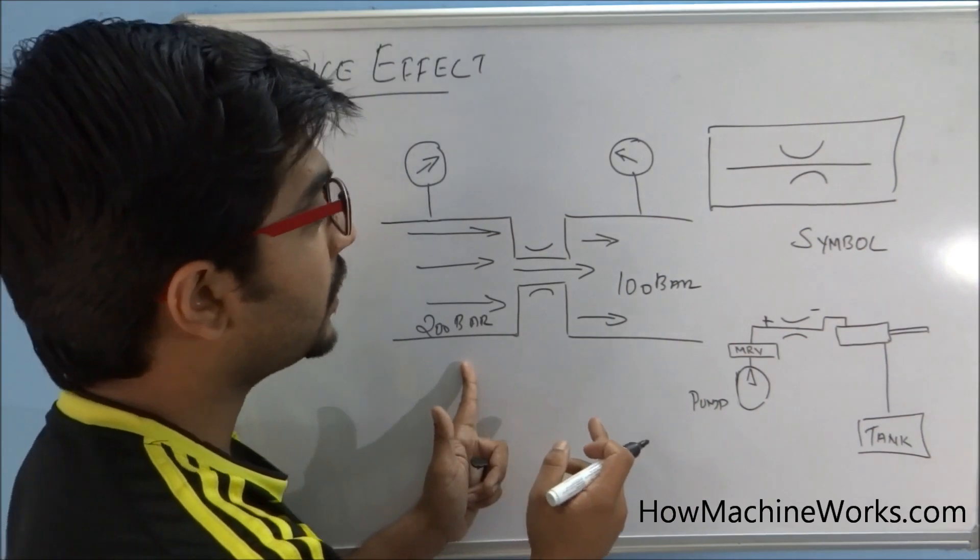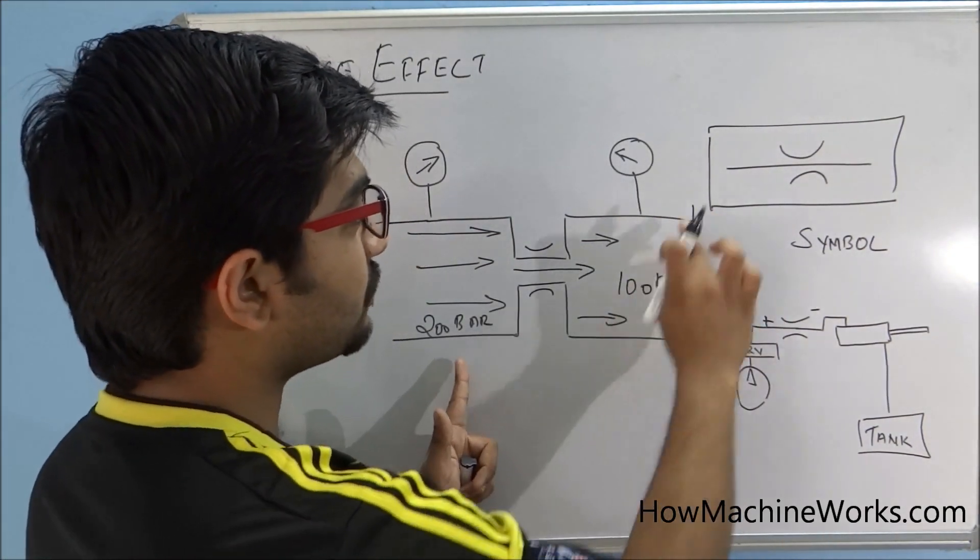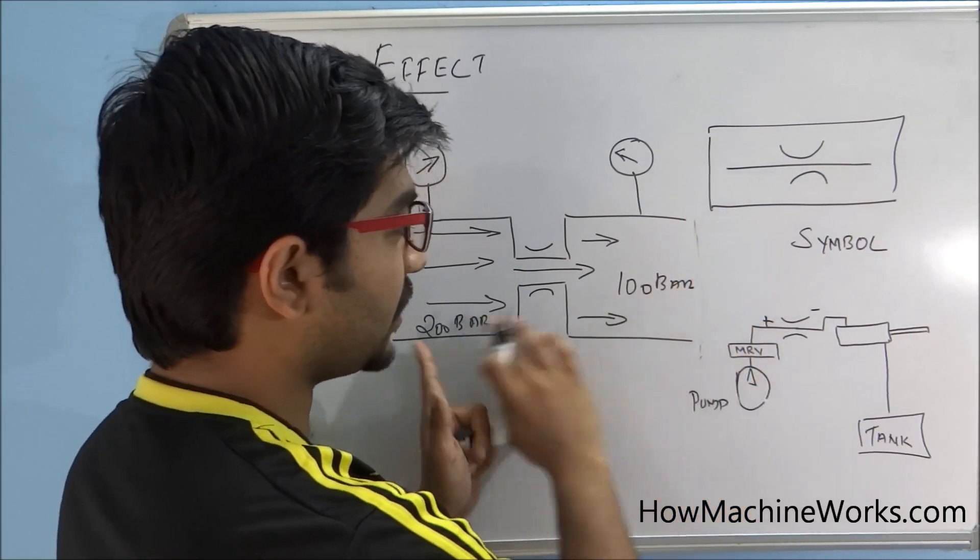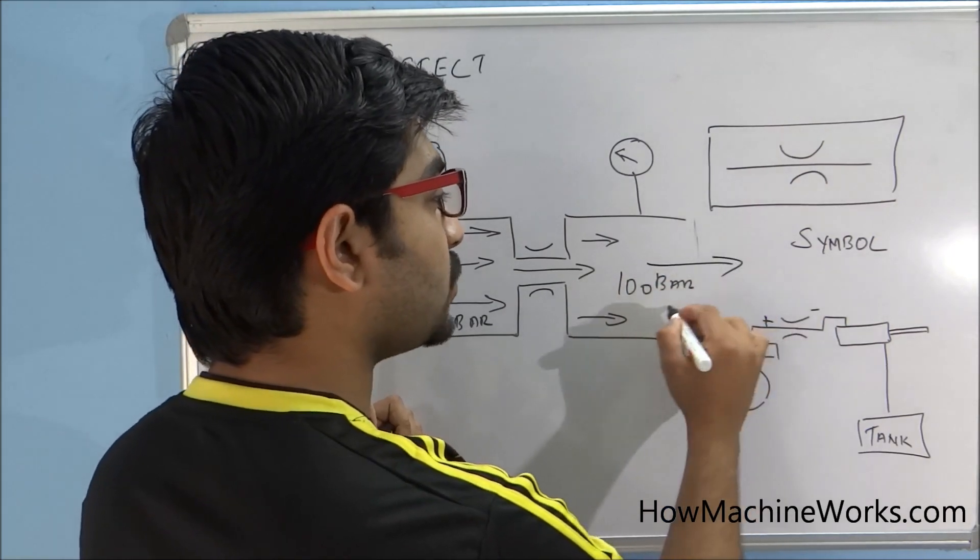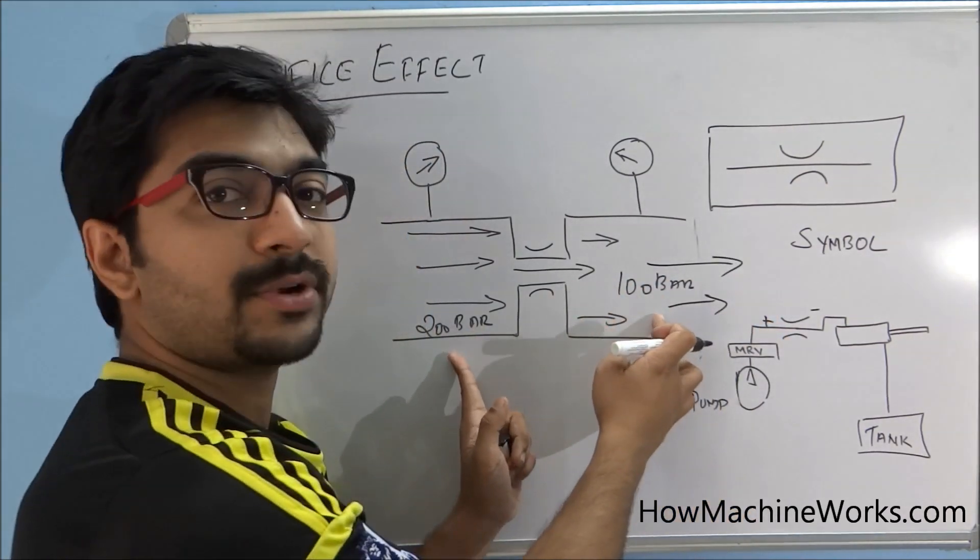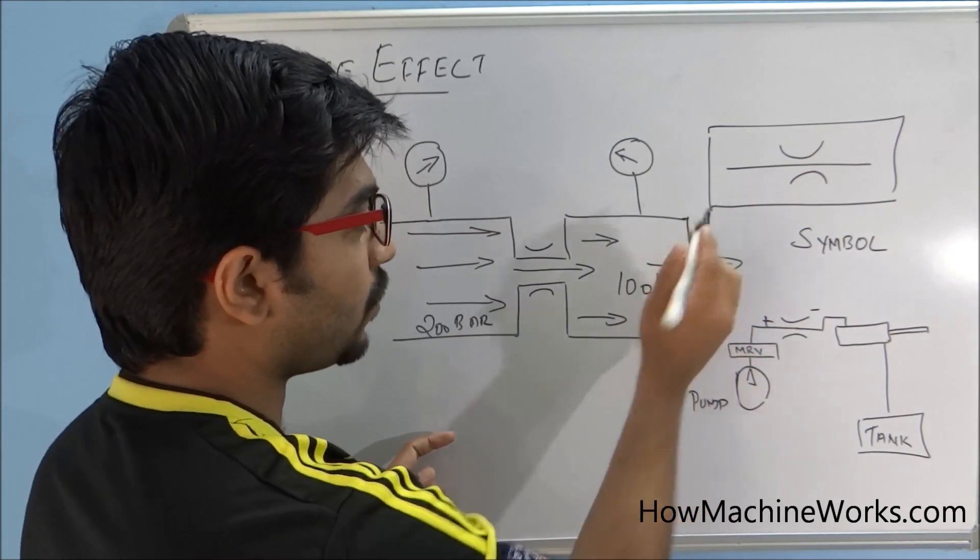This pressure difference can only happen if there is a flow - that means the flow is coming through here, going through the orifice, and again it continues its flow. Then this pressure difference will be there. What I'm doing is I'm blocking this area right now.